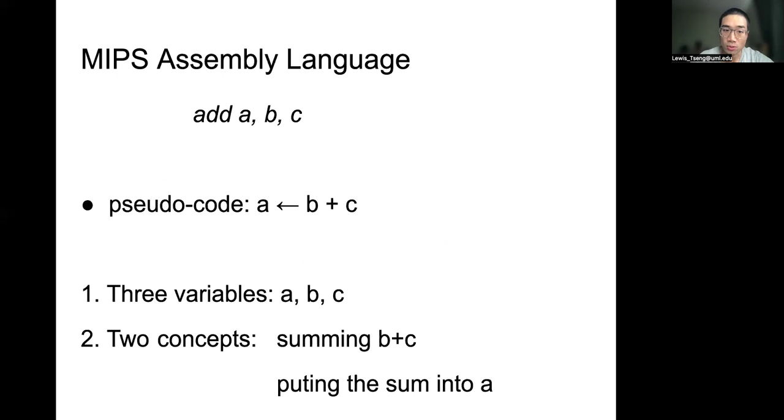The pseudocode is that you are going to do the sum of b plus c, and then put that value inside a. There are three variables a, b, c, and there are actually two concepts inside this instruction: summing b plus c, and then moving or copying the sum into a.